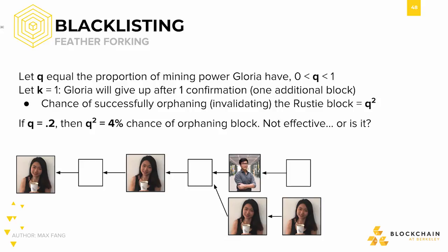In a case where Q is equal to 20%, this means her chance of successfully orphaning my block is just 20% squared, or 4%. These are not great odds.